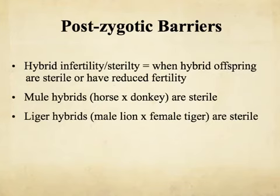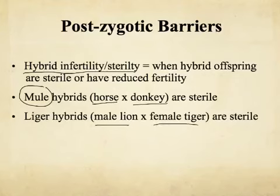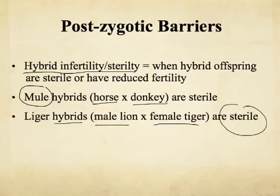We can also have hybrid infertility or sterility, which means you get an offspring, but the offspring is not fertile — it cannot have any offspring itself. For example, you can cross a horse and a donkey, which are two different species, and get a mule, but that mule is sterile and cannot have any offspring. Similarly, you could cross a male lion and a female tiger to get ligers, or a female lion and a male tiger to get tigons — in both cases the hybrid animal is sterile. Therefore lions and tigers are considered different species.